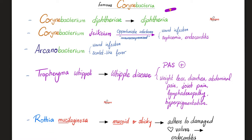Rothia mucilaginosa — look at how much mucin — it is mucoid and sticky, and adherent to damaged heart valves, causing subacute bacterial endocarditis.